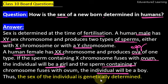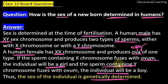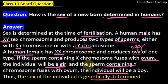Thus, the sex of the individual is genetically determined. Toh isse hum log yeh bata saktay hai ki jho new baby ka sex determination hai, woh genetic se hota hai, gene se hota hai — X aayega ya Y aayega. It totally depends upon the father of the baby, ki woh X ke saath release karenghe ya phir Y ke saath release karenghe — it will be a girl or it will be a boy. Thank you.